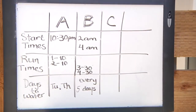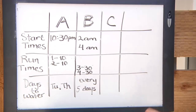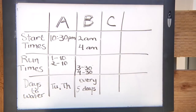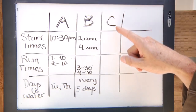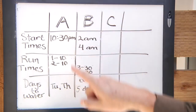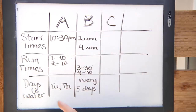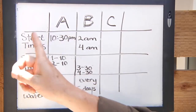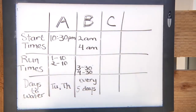To explain further the use of the different programs A, B, and C, we made a little chart — kind of like a tic-tac-toe board — with columns A, B, and C. In this example, we're not putting anything in program C, but you'll notice that each program has all three ingredients: start time, run time, and days to water.